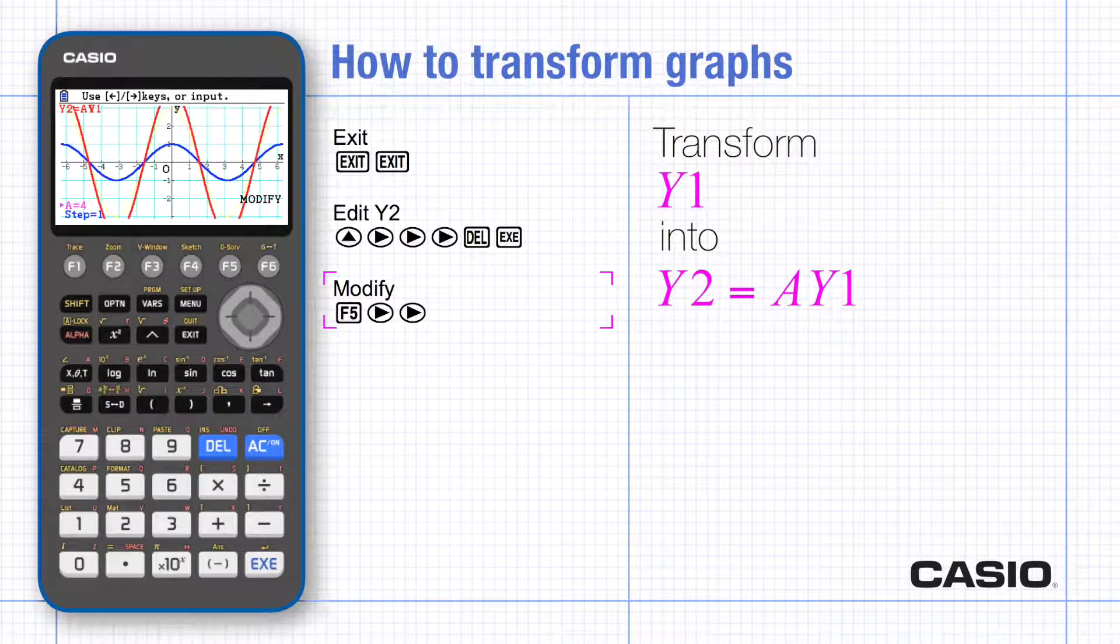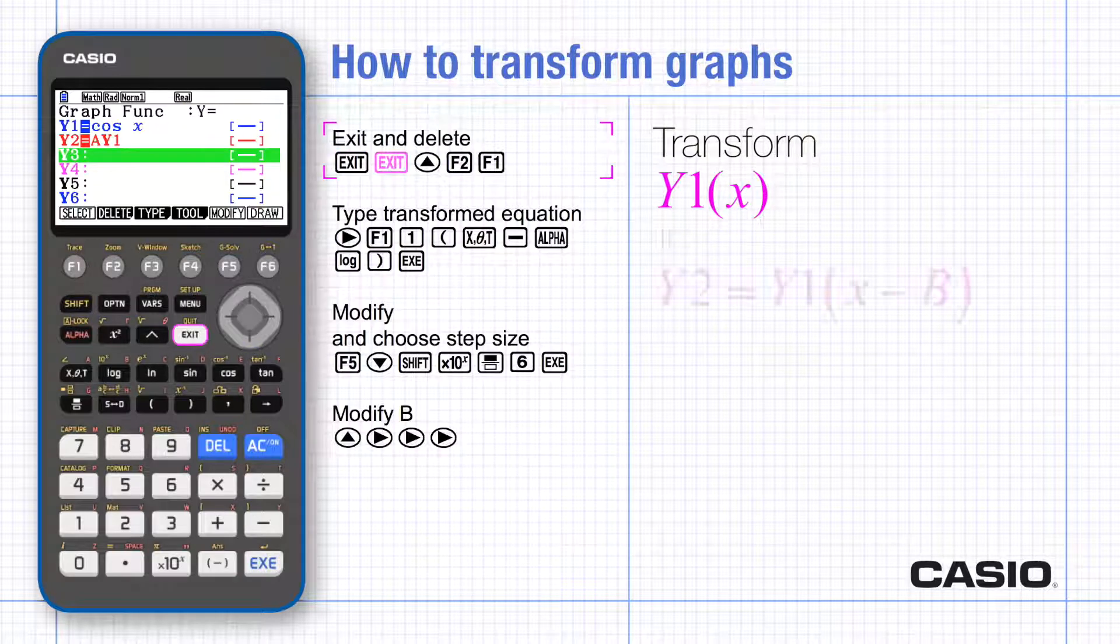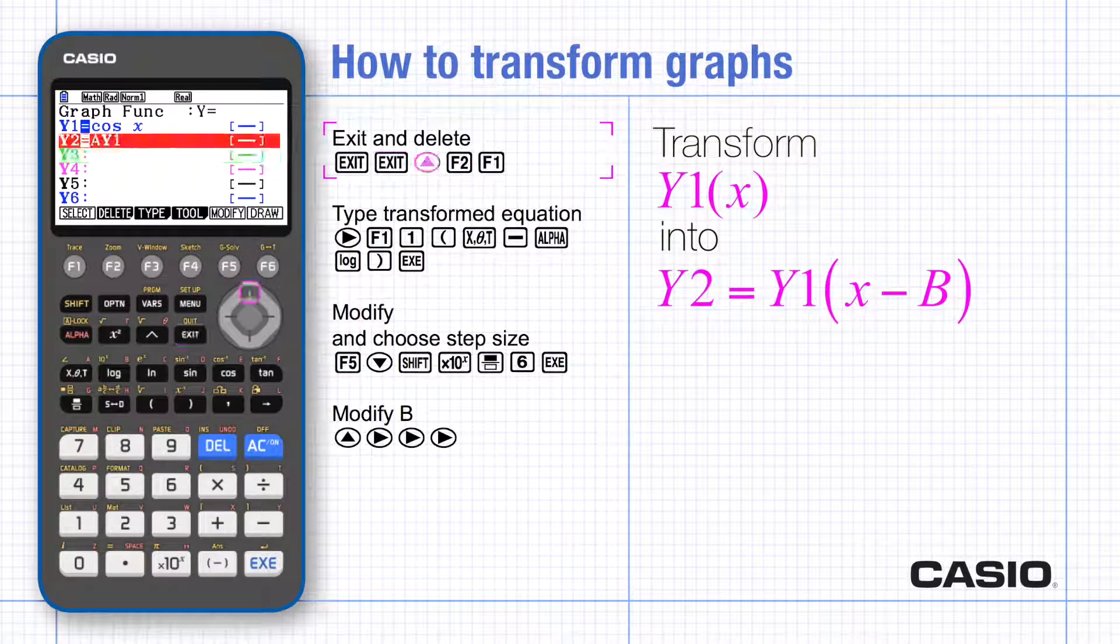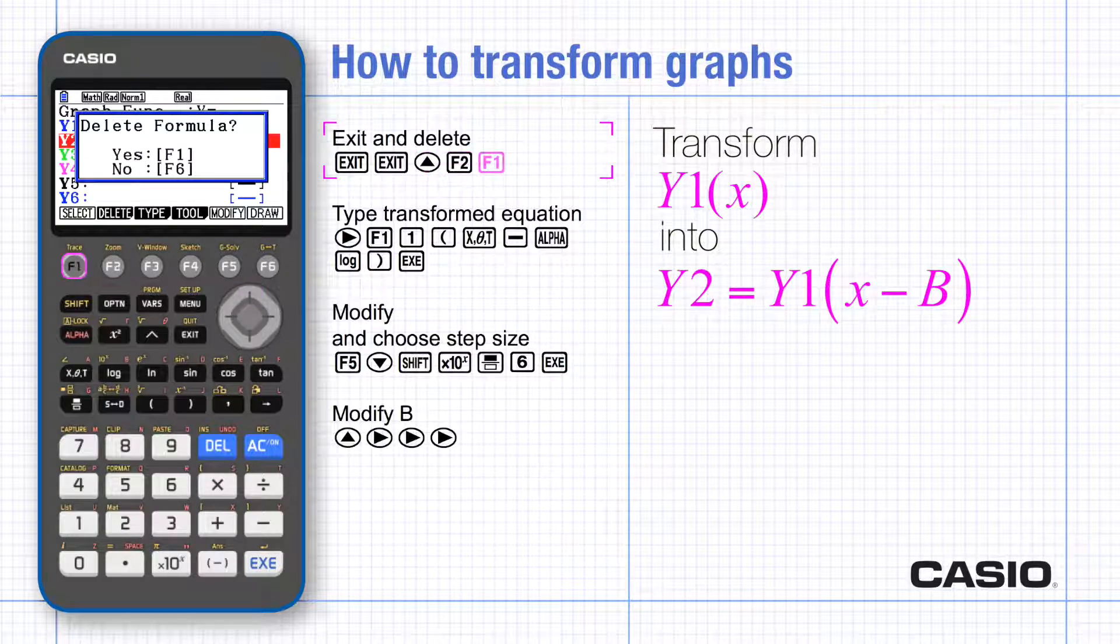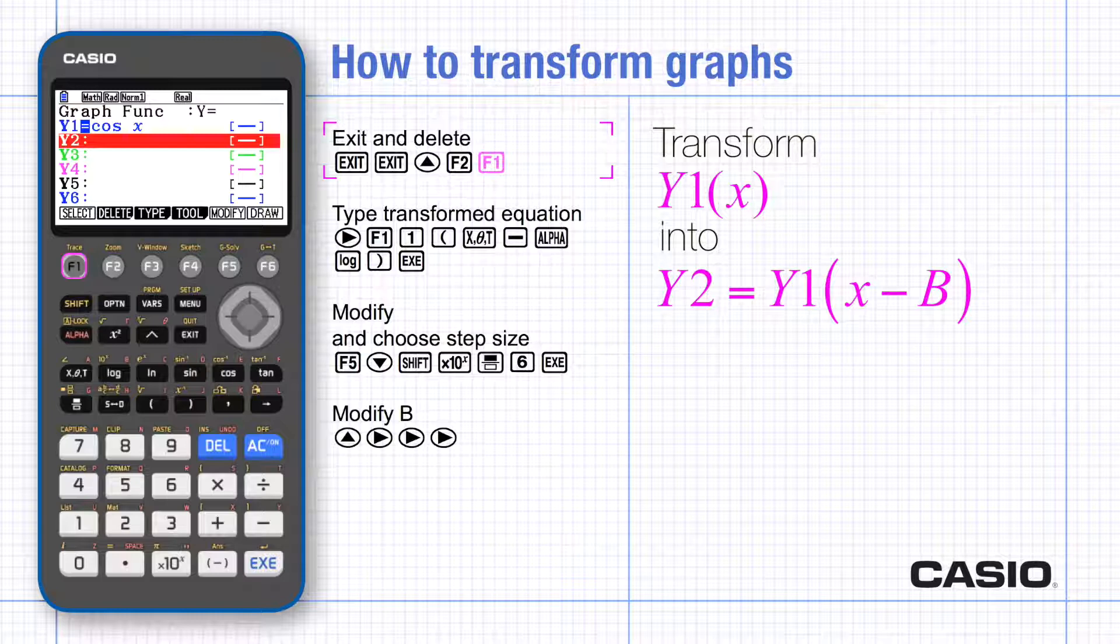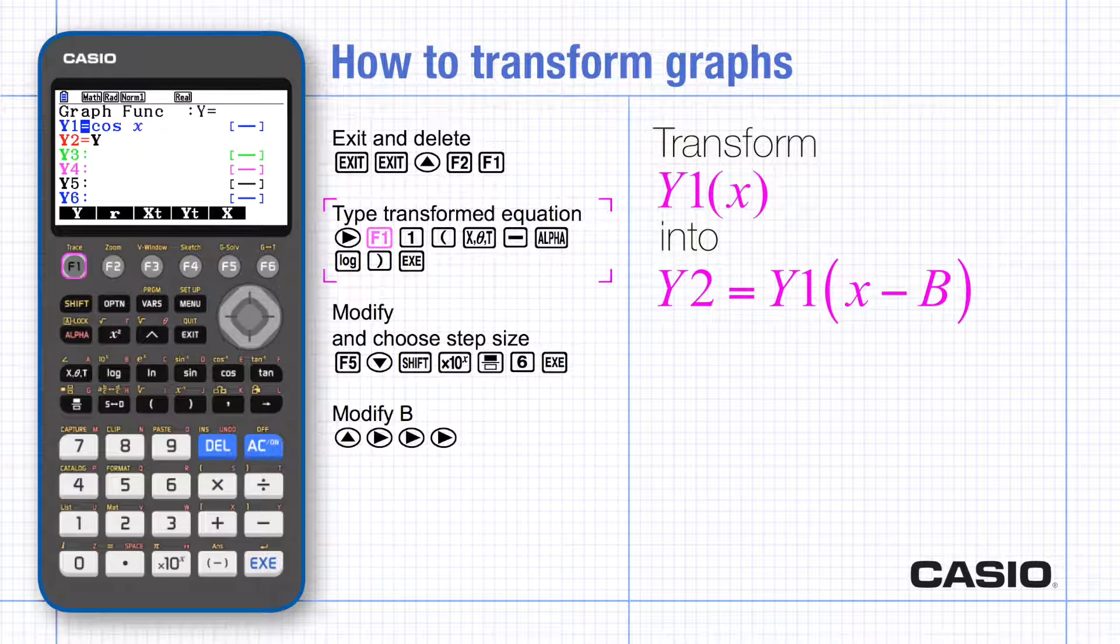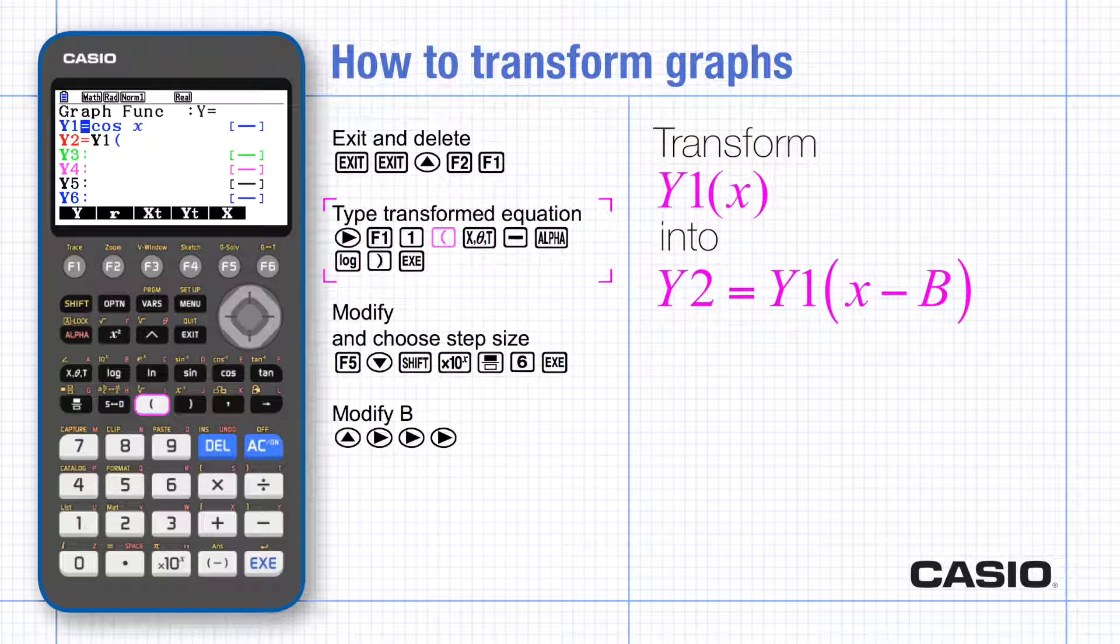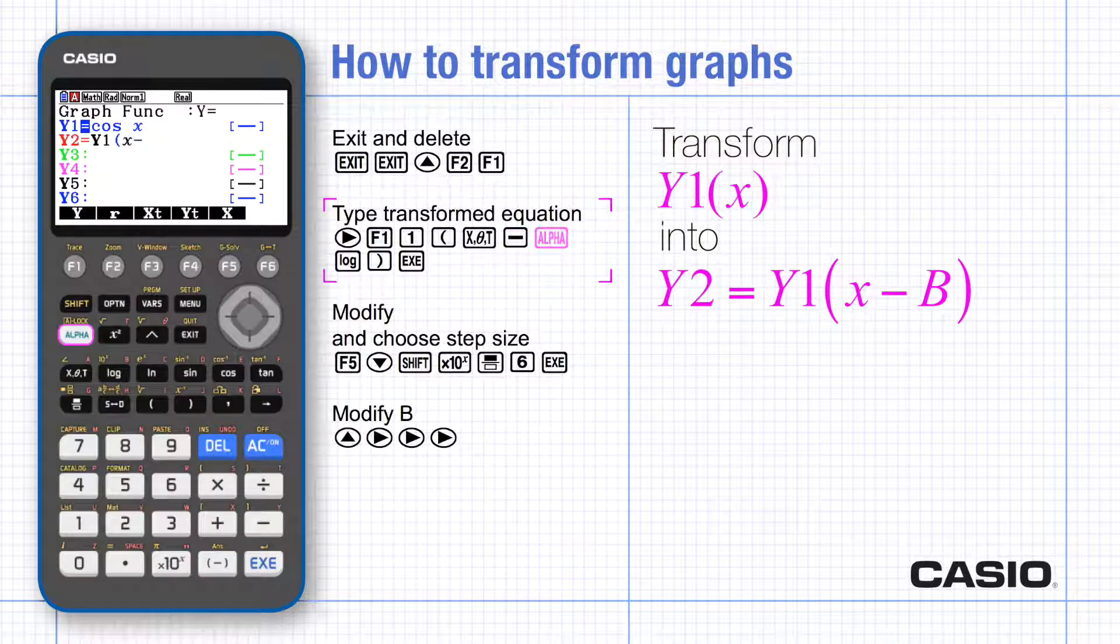To get transformations in the x direction we'll need to change the argument of the function. Press exit twice to get to the list of functions and then delete y2. If you now scroll sideways then y will appear at the bottom of the screen and you can type the transformed equations using f1 to get y, the variable key for x and alpha b to type the b and then when you're ready enter the equation.